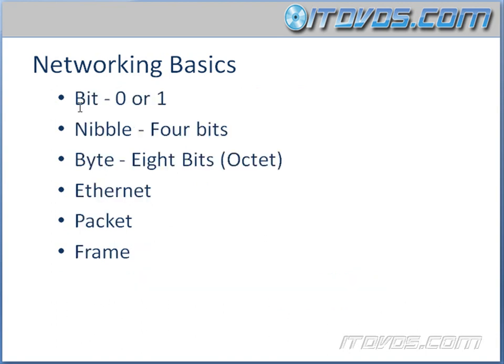The next term is a bit. A bit is either a zero or a one — also called off or on. This is how your computer thinks; it only processes zeros and ones. It's also how information is transferred over a physical wire, passed as zeros and ones. Those zeros and ones make up nibbles and bytes. A nibble is four bits and a byte is eight bits, also called an octet. We're going to become very familiar with bits, nibbles, and bytes as we go forward.